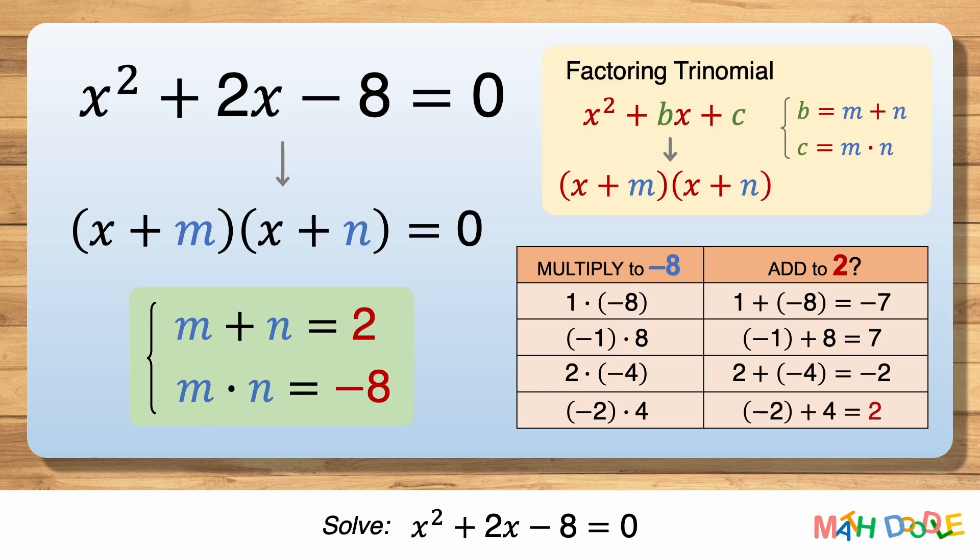Now, minus 2 plus 4 is 2. So, minus 2 and 4 not only multiply to minus 8, but also add to 2. This means m and n are minus 2 and 4.